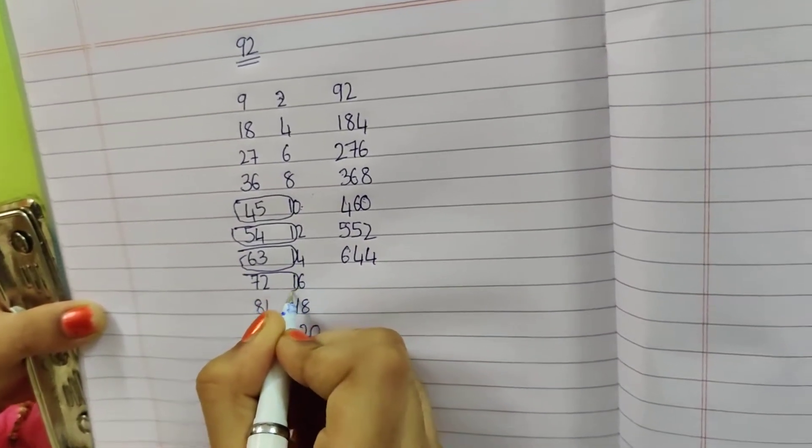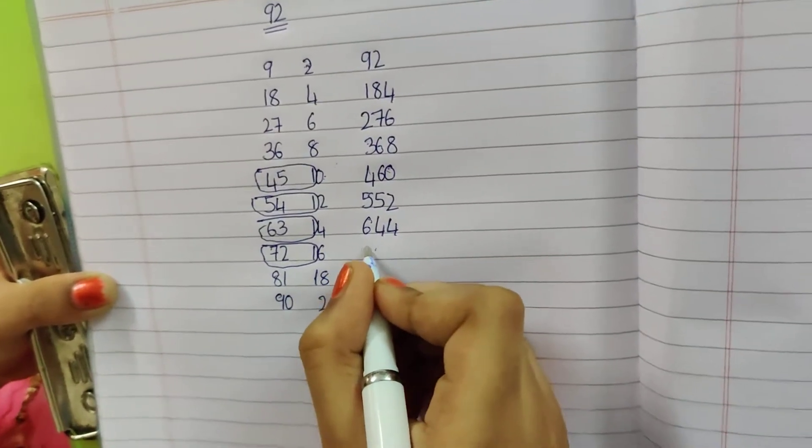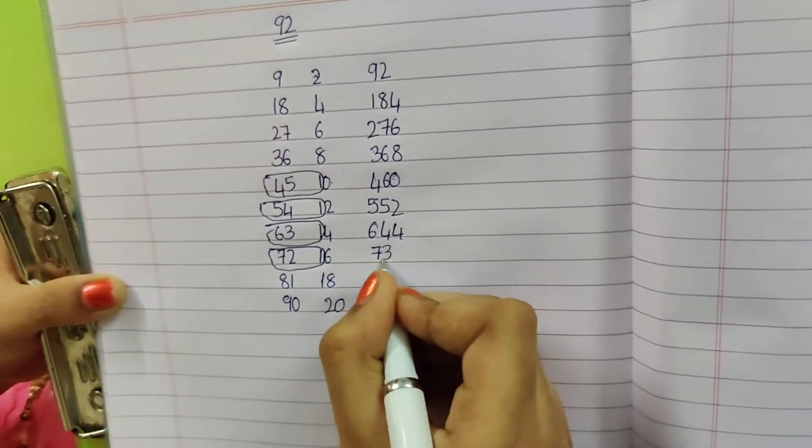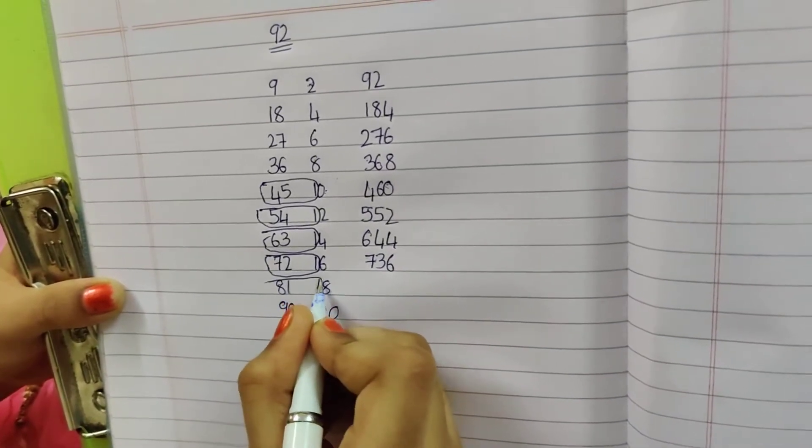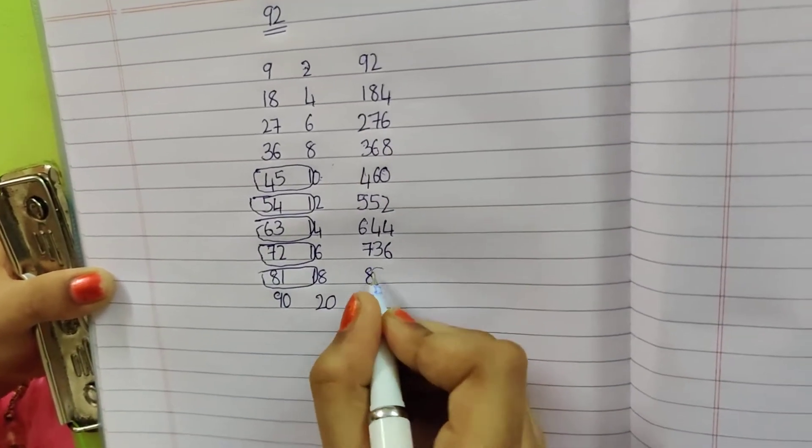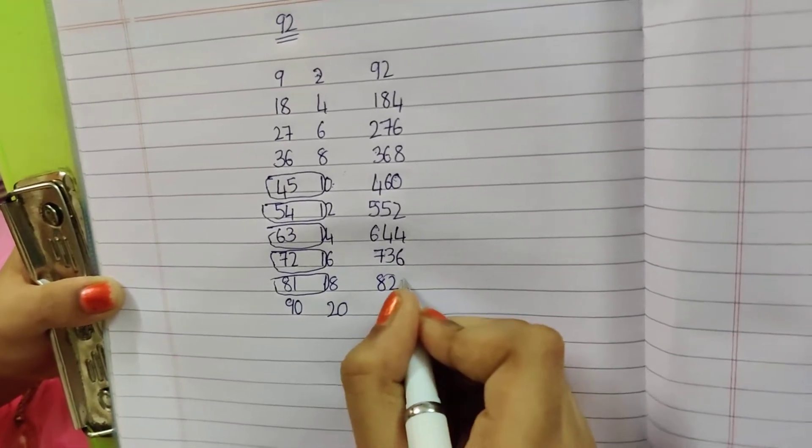72 plus 1, 73. Write 6. 81 plus 1, 82, 8.